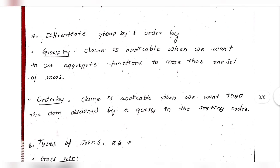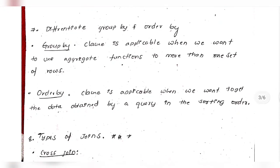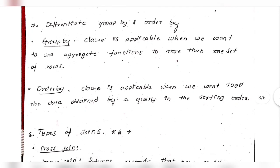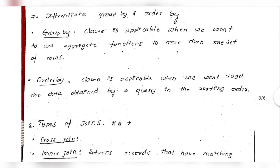Differentiate GROUP BY and ORDER BY. GROUP BY is used with aggregate functions when you want to apply aggregation to more than one set of rows. ORDER BY is basically for sorting — you can sort in increasing or decreasing order.